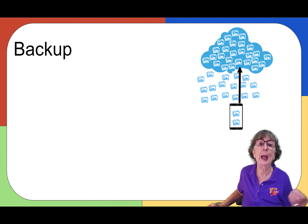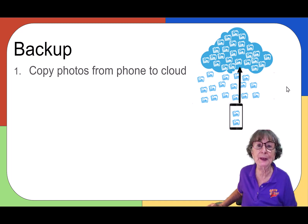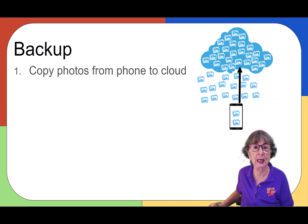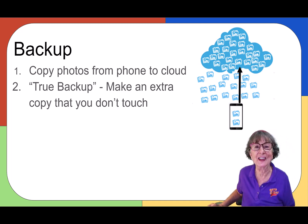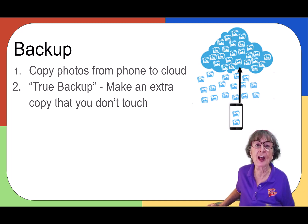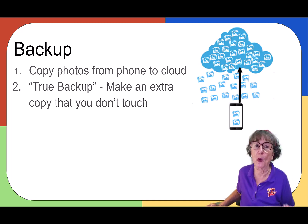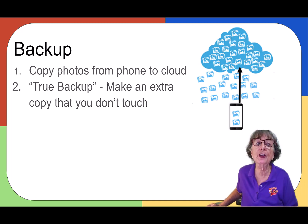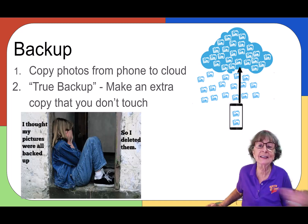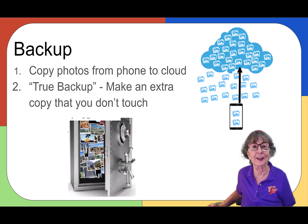The last term is backup. The first meaning of the word is simply to copy photos from your phone to the cloud — that is a backup from your phone to the cloud. But there's more. There's something called a true backup, which is an extra copy that you don't touch. For example, I use Google Photos for the number one — copying photos to the cloud — and I work with them there. It's my working copy, so I could accidentally delete bunches of them. If so, I better have another backup.